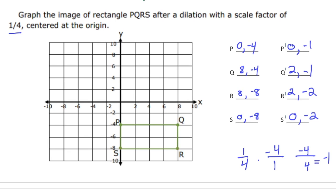Now let's plot these new points in green. (0, -1) is right about here — that's P prime. Q prime is (2, -1), which is right here. R prime is (2, -2), right here. And S prime is (0, -2), right here. This little rectangle is the original image dilated by a scale of one-fourth. Pause the video and try the next problem, then hit play when you're done to see how you did. Good luck.